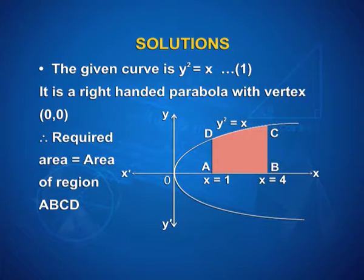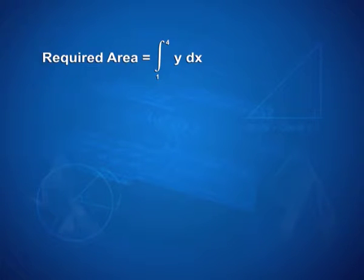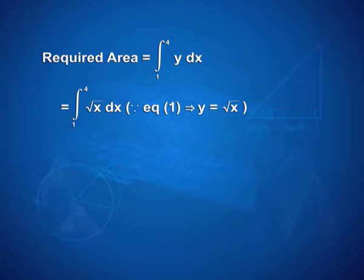The required area is equal to the area of the region ABCD. Here you can see it is a right-handed parabola with the shaded region ABCD, where x = 1 at A and x = 4 at B. Therefore, the required area is equal to the integral from 1 to 4 of y dx, which equals the integral from 1 to 4 of √x dx, since equation 1 gives y = √x.